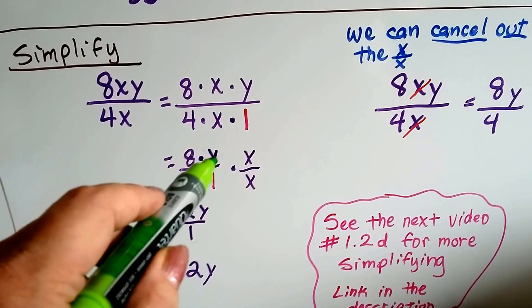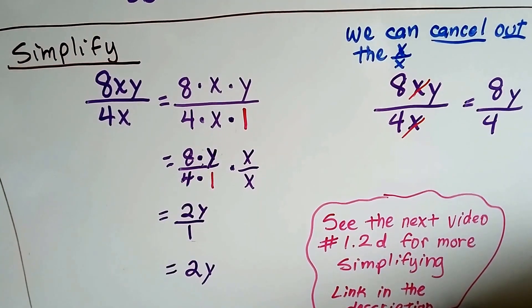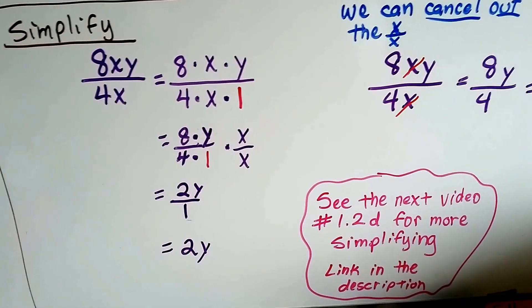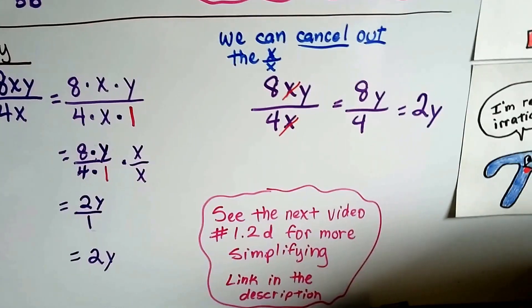2y over 1. This is 2. There's our y. And there's our 1. So, it ends up being 2y.